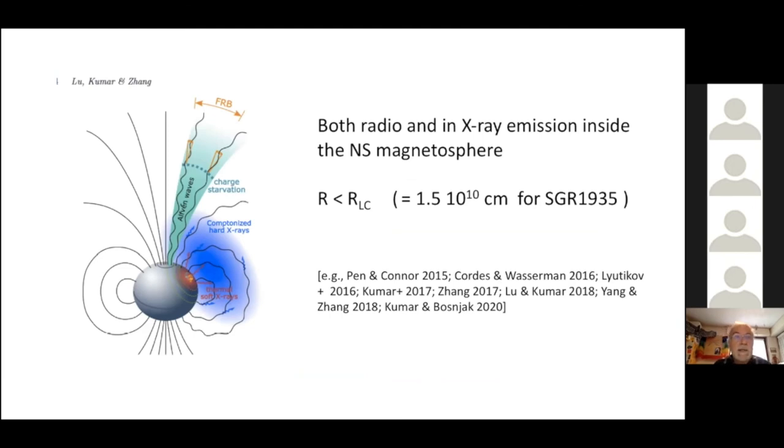These pulsar-like models are attractive, in my opinion, because we believe that at least the X-ray and gamma rays of the bursts indeed takes place in the magnetosphere. So, I think that these kinds of models are in a sense more straightforward, because they involve a single production site. On the other hand, it is true that even after 50 years, we do not know what produces radio emission in radio pulsars. So, it is even more complicated here in the case of FRBs.